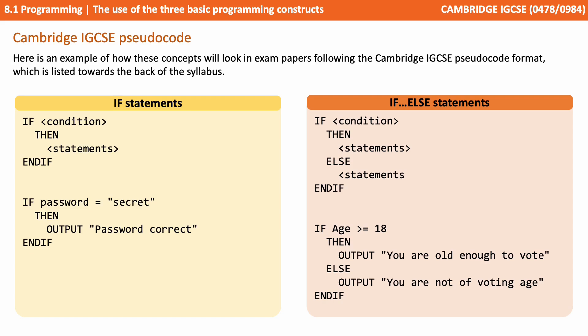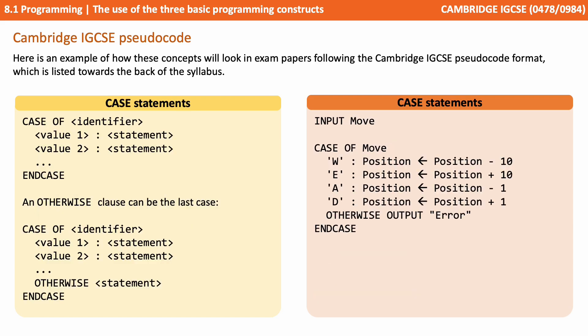Here we see an example of how the case statement will look in the exam, and note it's quite different from the Python version we showed you earlier and indeed how it's implemented in other languages, so really be aware of this. So we have 'case of' and then the identifier. You can also add an 'otherwise' clause if you want a statement to always be executed if none of the values match, and this must always be the last option. So the example on the right there asks the user to input their move, and then if it matches either capital W, E, A, or D, it executes the appropriate line of code, otherwise it outputs the string 'error.'